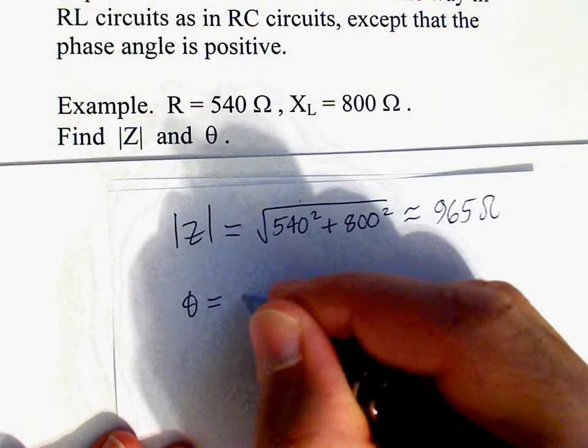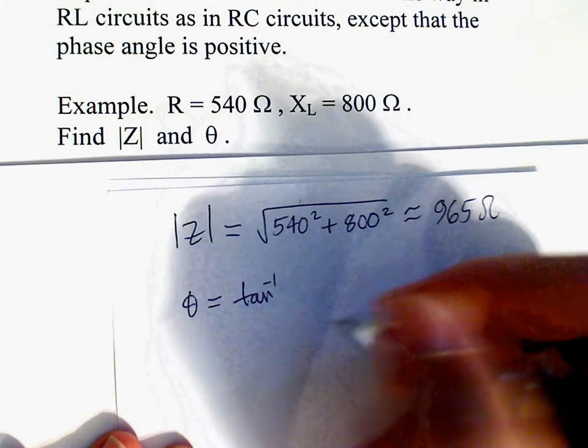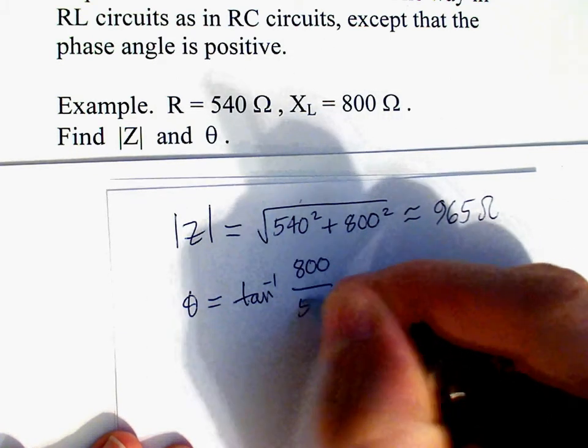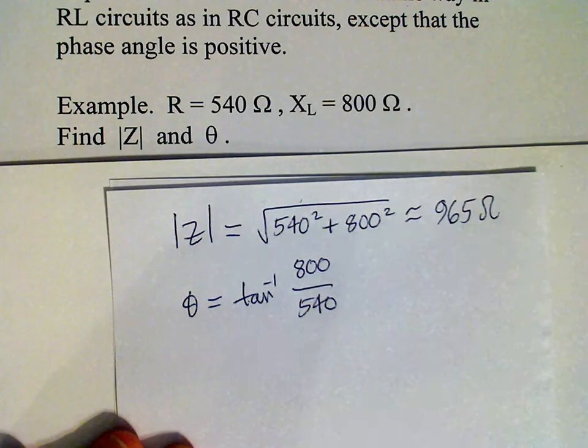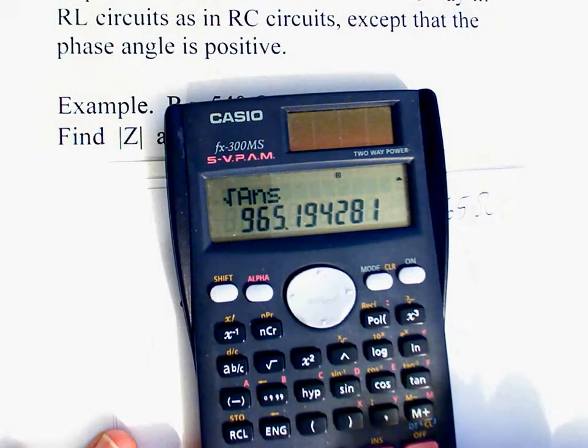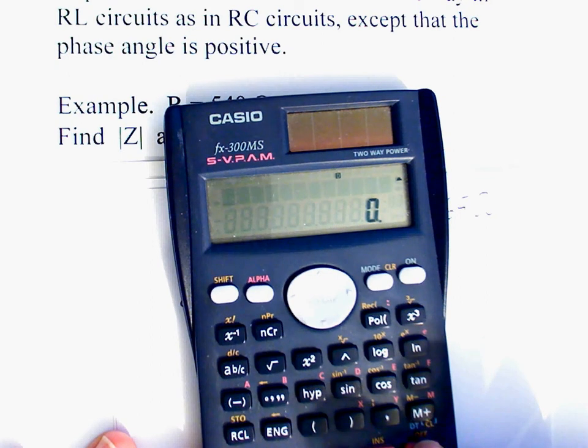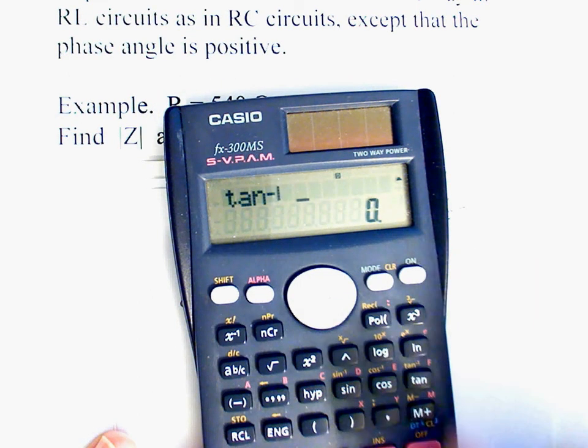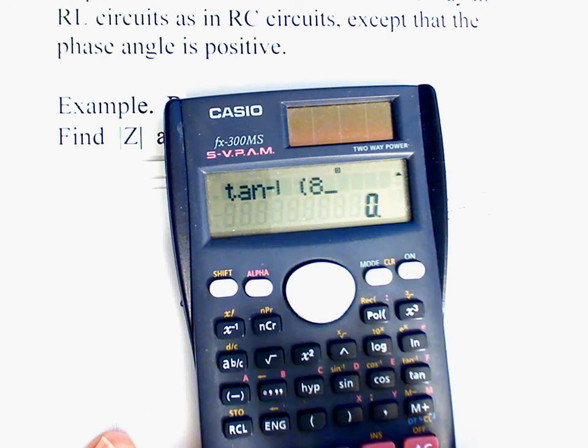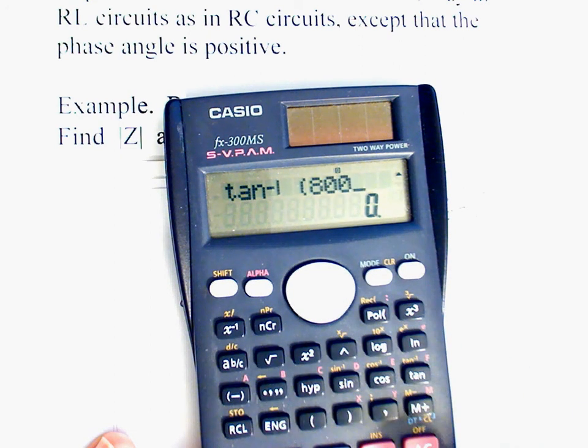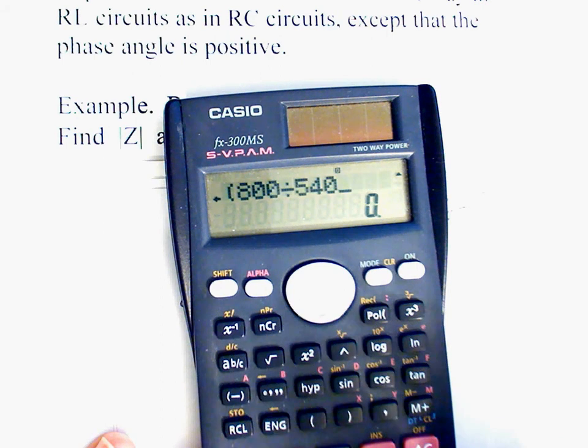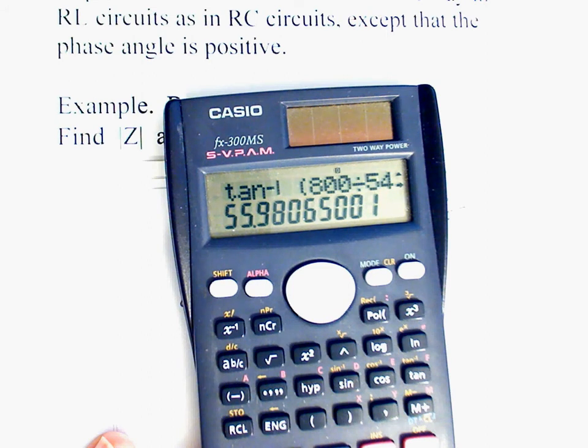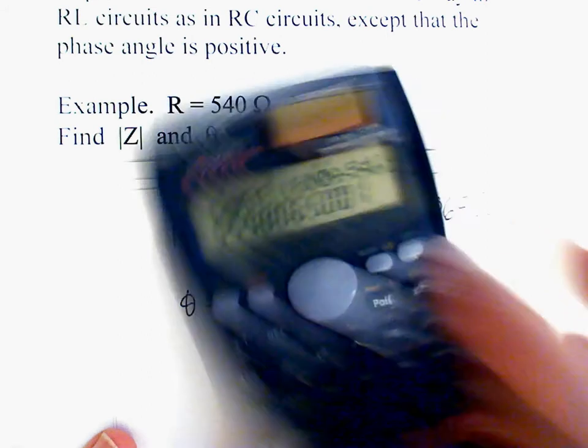Okay, and then the phase angle is inverse tangent XL over R, so 800 over 540. And the answer is about 56 degrees.